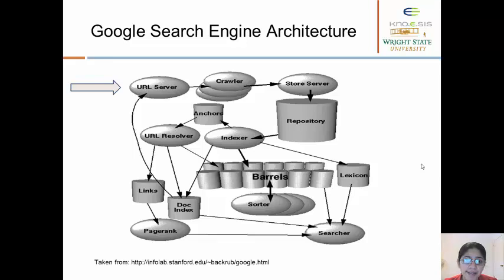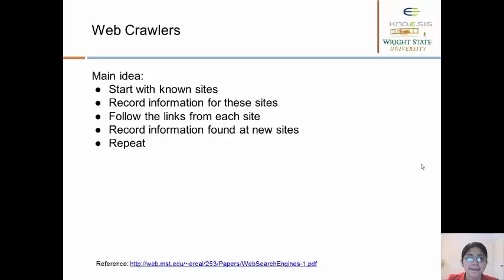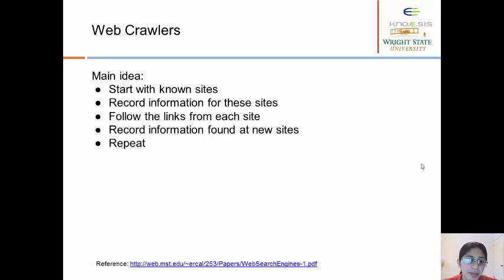Let's look at the web crawler — what challenges it has to face and how it works. The main idea is you start with known sites, record the information for these sites in a structured format, then follow the links from each of these sites, record the information found at the new sites, and repeat. You are essentially expanding your web across the internet to get access to relevant data.